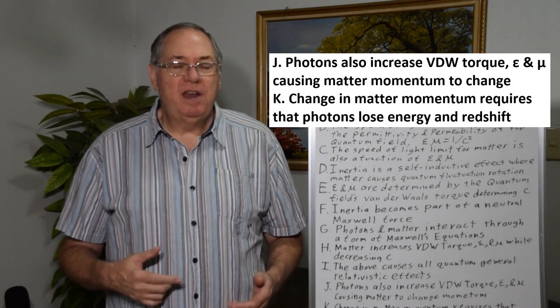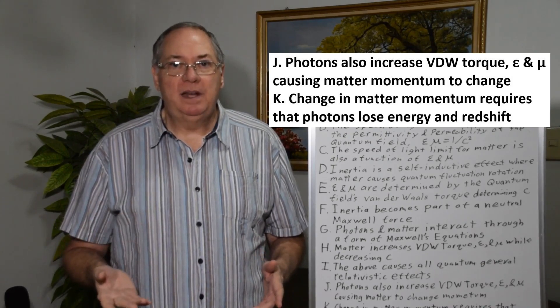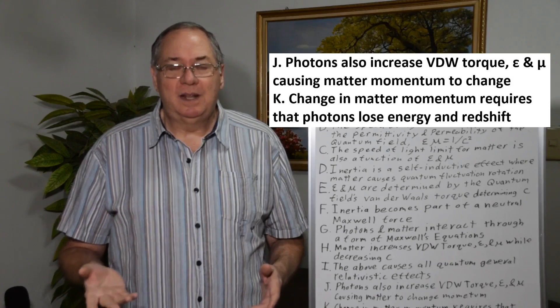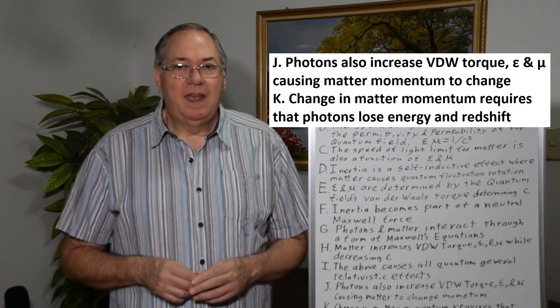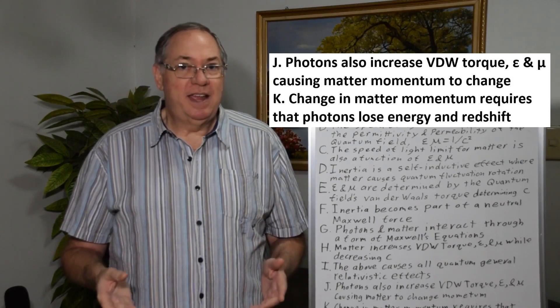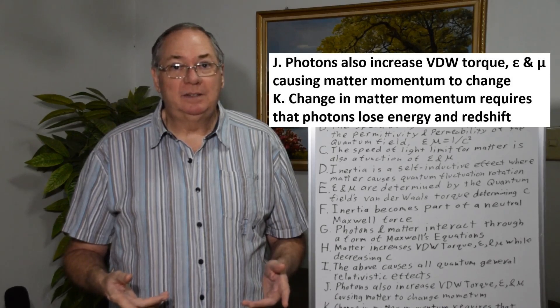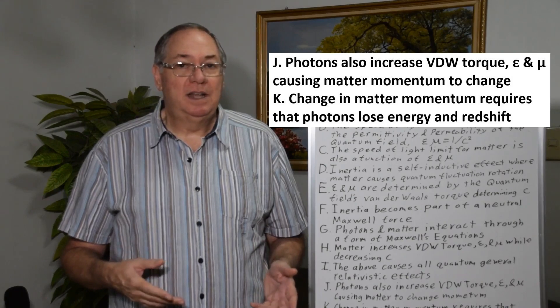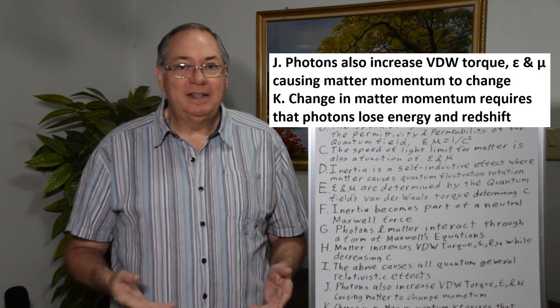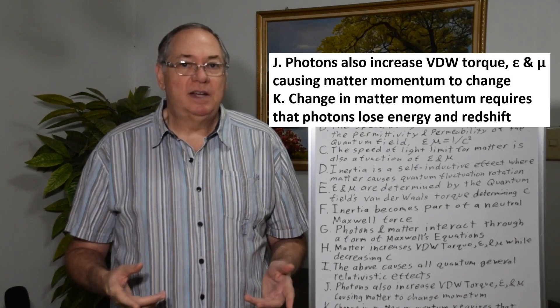So what's important to understanding redshift is not only does matter cause the Van der Waals torque and permittivity and permeability to increase, photons cause Van der Waals torque and cause the permittivity and permeability to increase. And that changes the momentum of matter and changes to the momentum of matter take energy. The energy has to come from somewhere, so it must come from the photon. So the photon loses energy. It can't lose velocity. Once it passes the matter, it regains its velocity. So it loses energy. And that's how redshift happens.